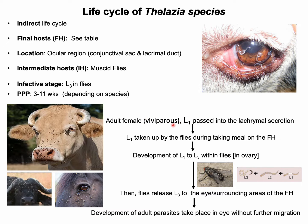The adult female parasite is viviparous — they deposit L1 larvae in the lacrimal secretion. When flies visit the host, they take up this L1 during feeding. Development from L1 to L3 occurs within the flies in approximately 13 to 15 days during summer months, depending on environmental factors.